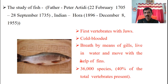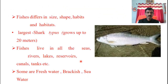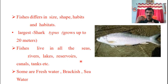Fish is a vertebrate - already mentioned in the definition - have jaws in the mouth; some fishes have jaws, some fishes don't have jaws. Cold-blooded, breathe by means of gills, live in water. A special point is that 36,000 species are present in the world, within which 40% of total vertebrates are present. Fishes have different sizes, different shapes, and different habits. Some are carnivorous, some are herbivorous, and some are predator fishes. It depends upon the fish and its size, length, and shape.